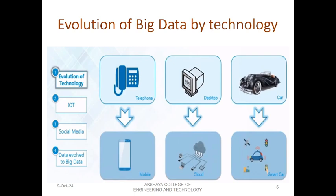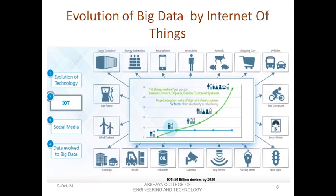Evolution of big data by technology: initially we had analog phones, now we use digital mobile phones. Computers used to work in a standalone manner; now we have cloud computing and autonomous cars. When it comes to IoT — Internet of Things — it continuously generates data through lots of sensors used in each and every industry and field, which generates and records large amounts of data.